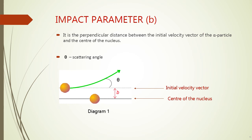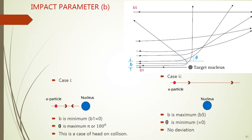Impact parameter is represented as B and is defined as the perpendicular distance between the initial velocity vector of the alpha particle and the center of the nucleus. From diagram 1, we can see the distance between the initial velocity vector (shown as a dotted line) and the center of the nucleus (shown as a black line) is given as B — the impact parameter. The angle between the trajectory of the alpha particle and the initial velocity vector is given as theta.